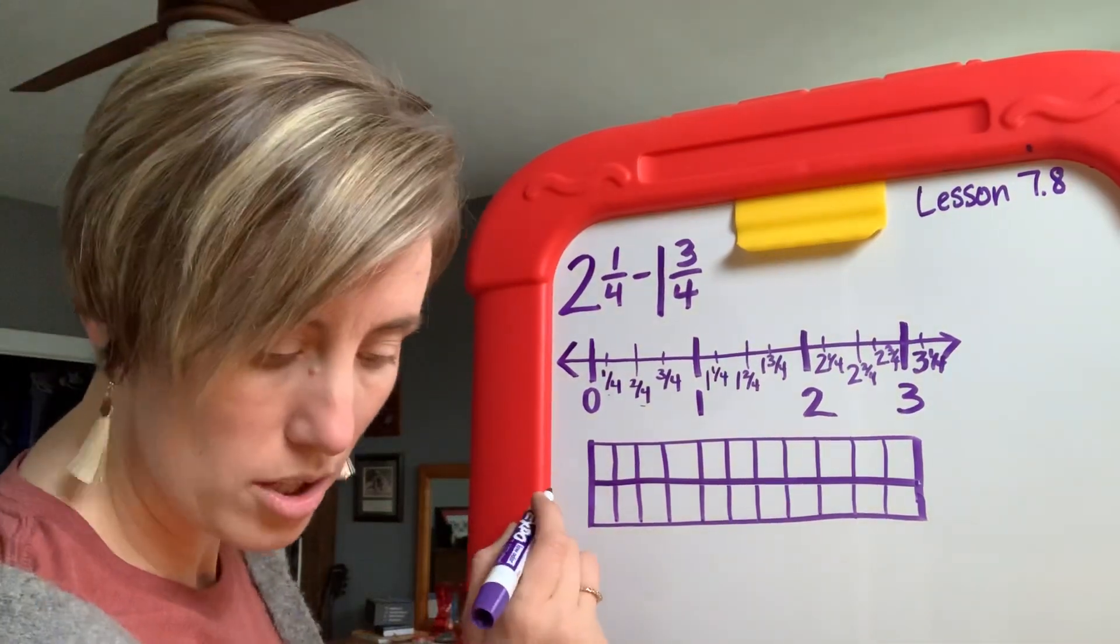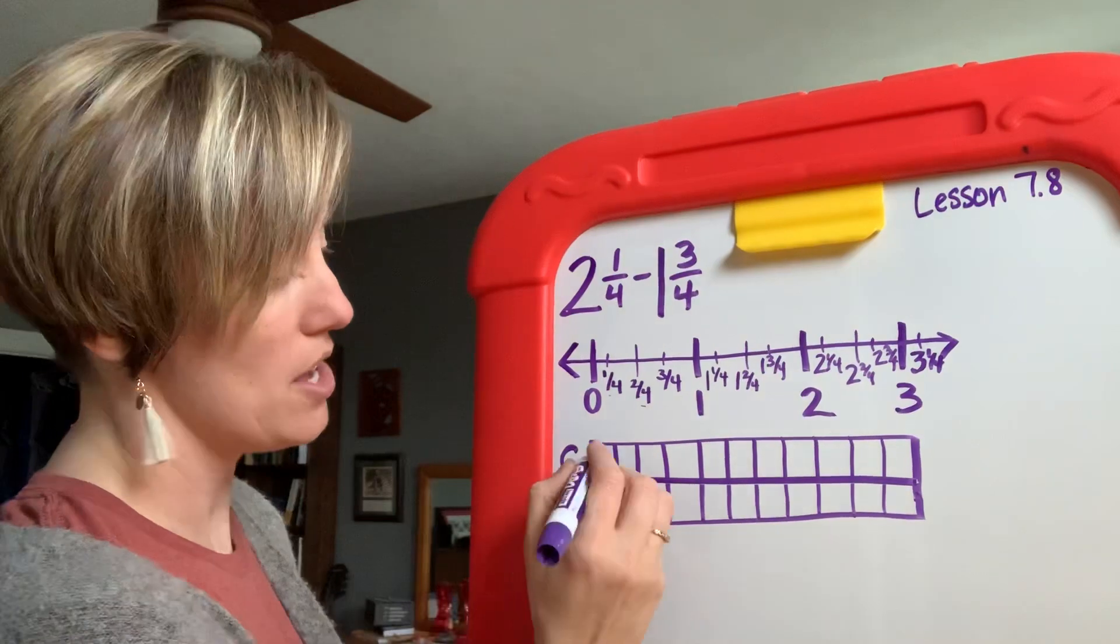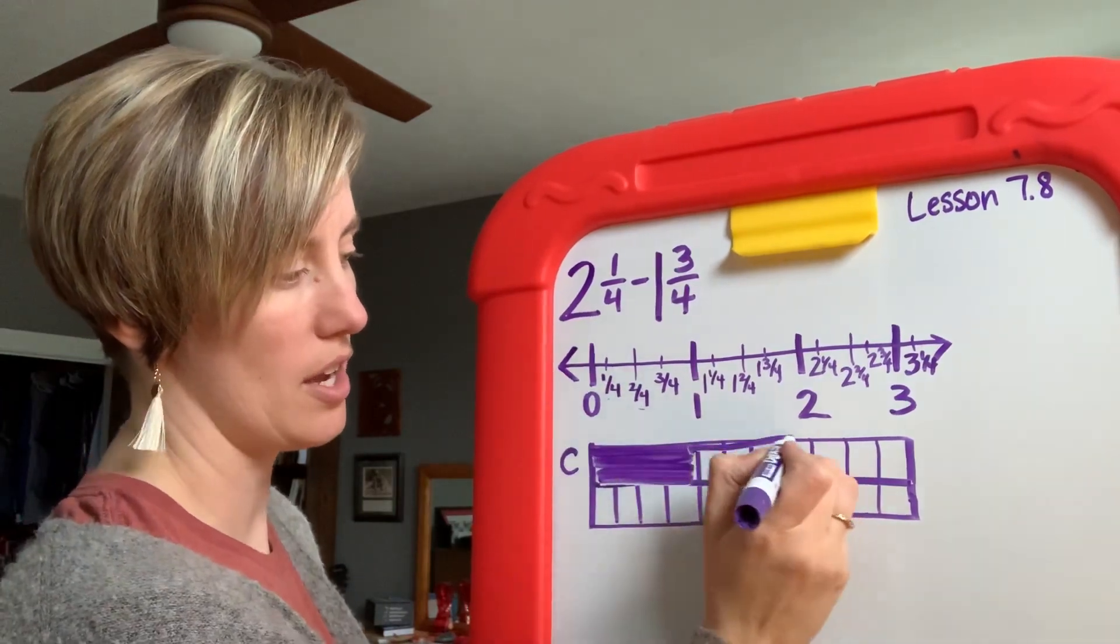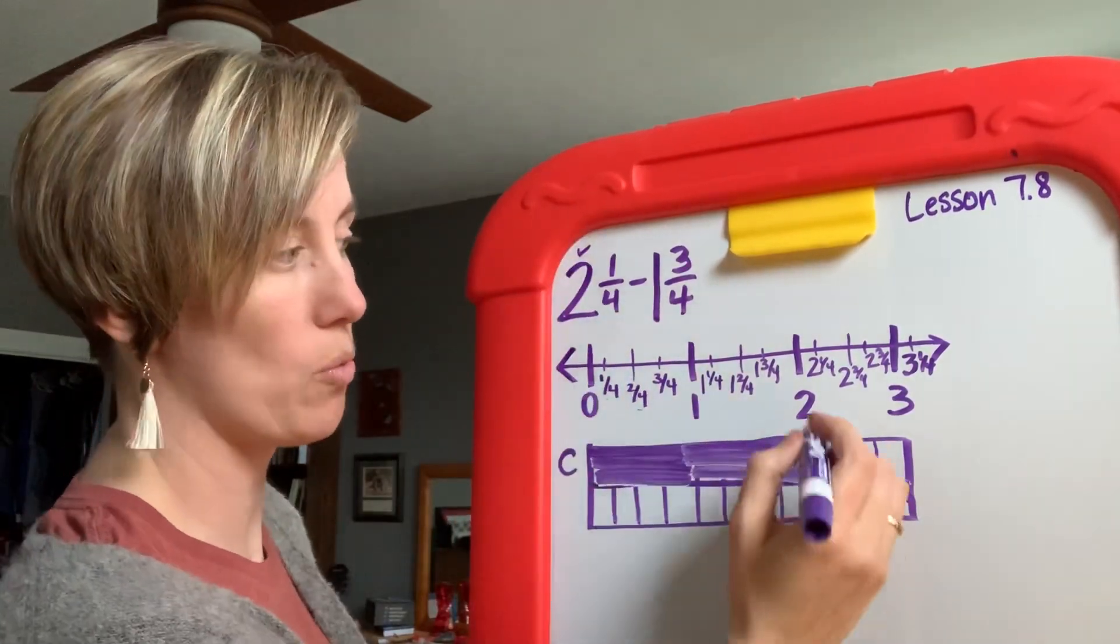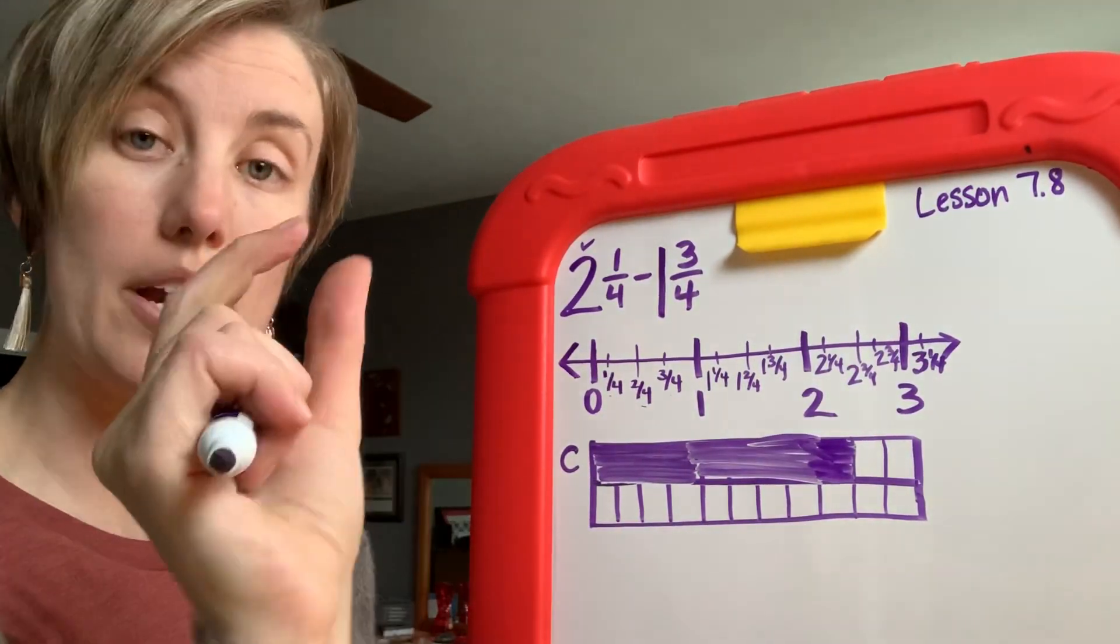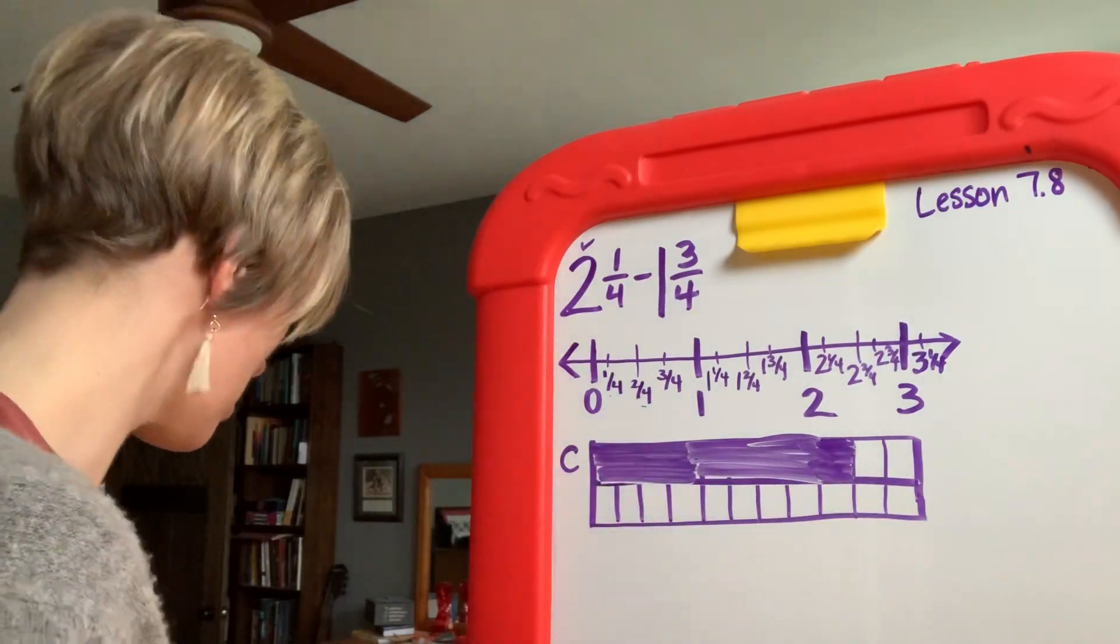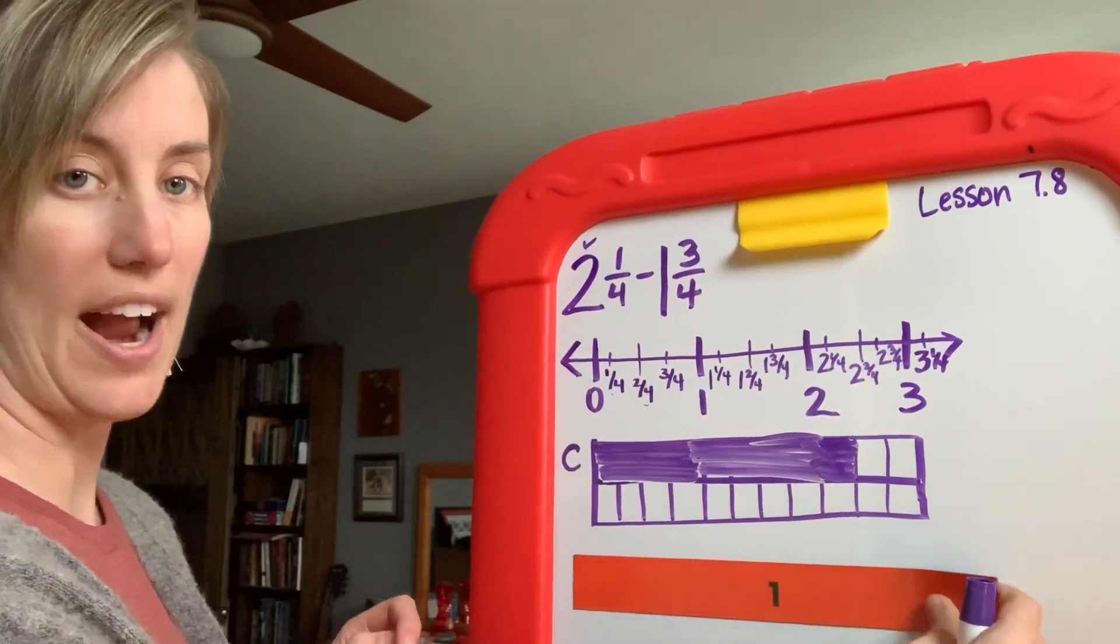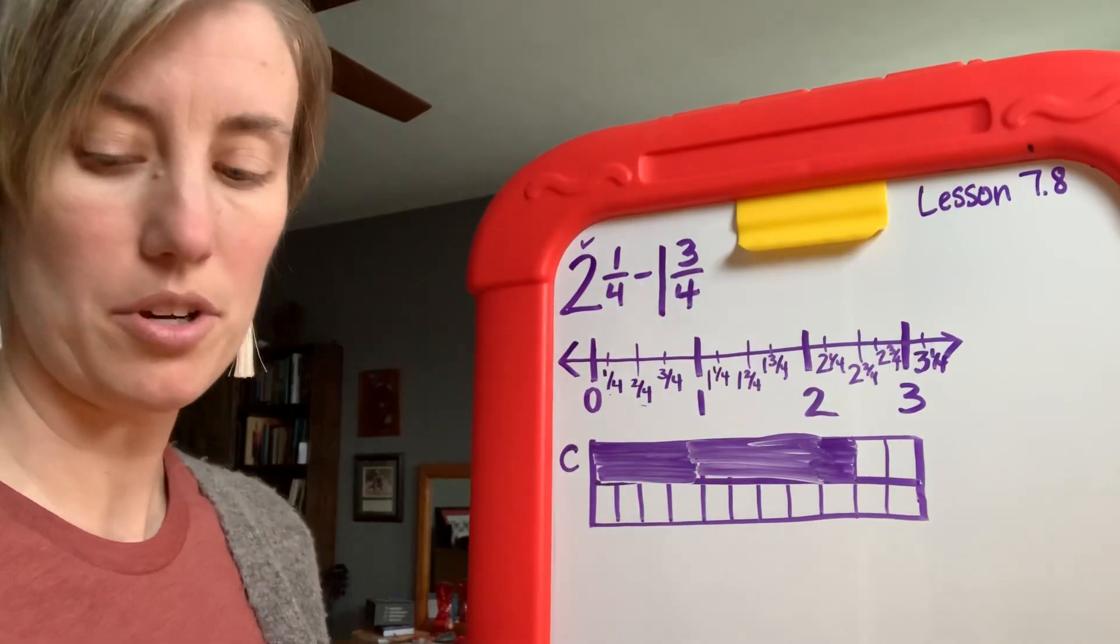So what we're going to do for Chandler, we're going to put a C here and Chandler rode his bike 2 and 1/4 of a mile. So we're going to color that in, so here we have one whole, there's one of the two, here's two of the two, so now we have the two taken care of. Now we need 1/4. Our boxes, our model is broken into fourths, so when you color in one small box you're not coloring in one, you're coloring in a fourth.